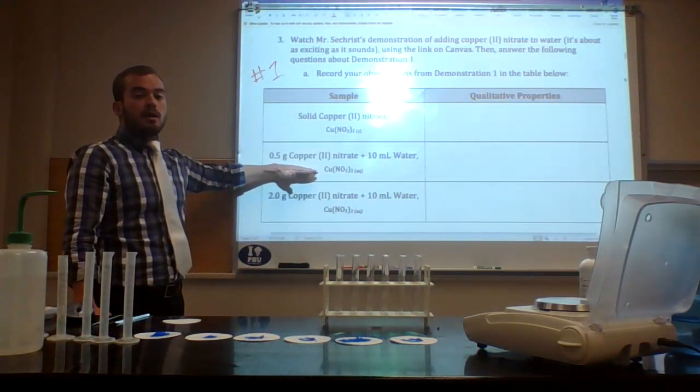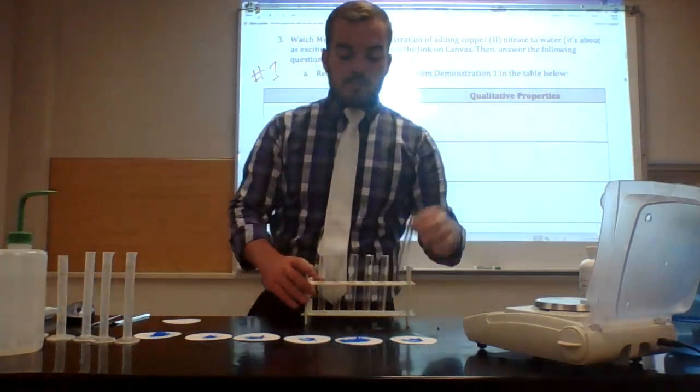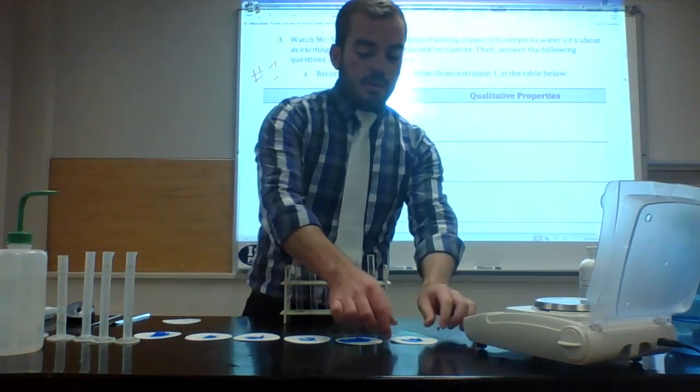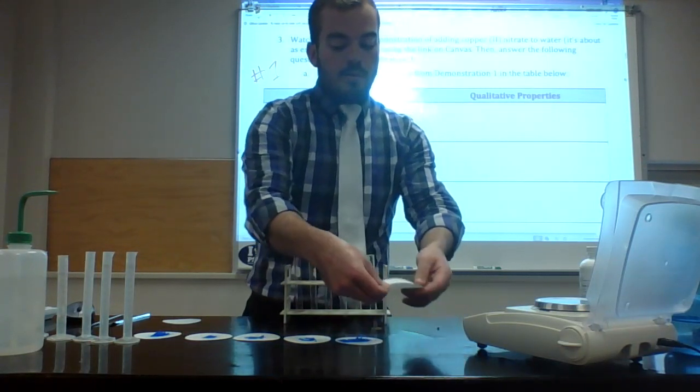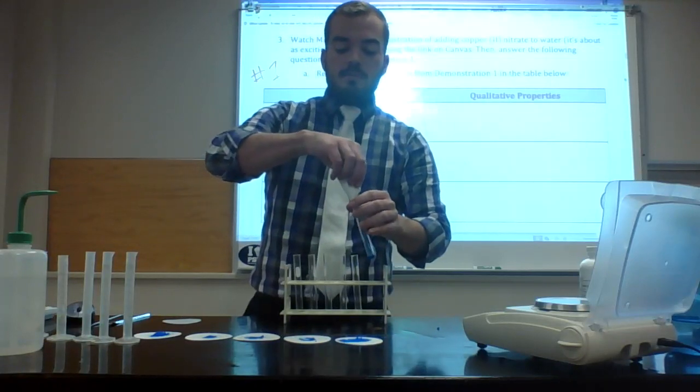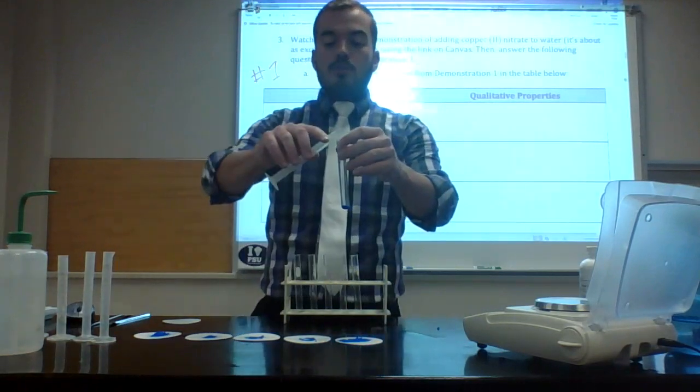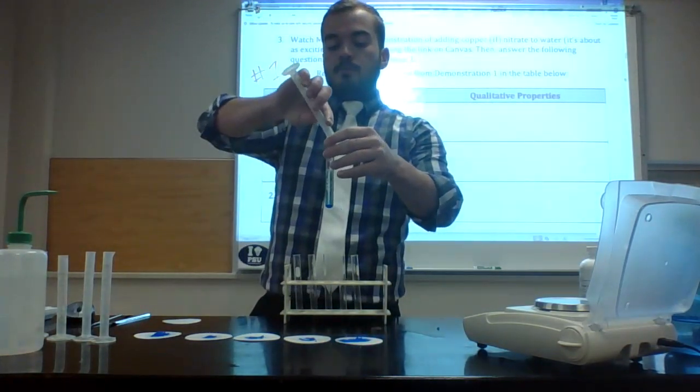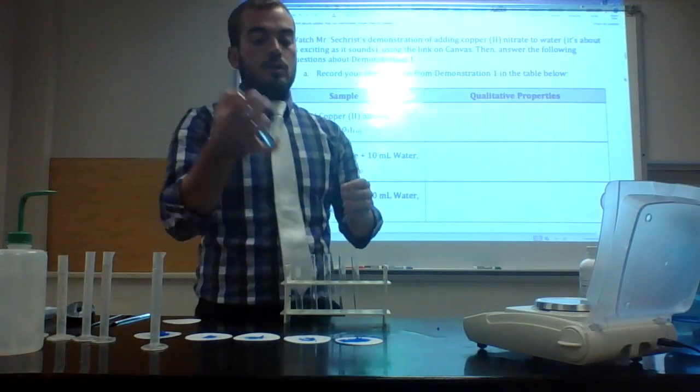So that's copper(II) nitrate. We're going to make several solutions of this. The first one, I'm going to take 0.5 grams of copper(II) nitrate and add it to 10 milliliters of water. I'll just put it in this test tube, add my 10 milliliters water, and shake it up.